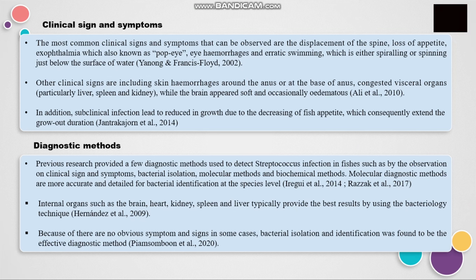For the diagnostic methods, there are several methods used to detect Streptococcus infection in fishes, such as observation of clinical signs and symptoms, bacterial isolation, molecular methods, and biochemical methods. Molecular diagnostic methods are more accurate and detailed for bacterial identification at the species level. Internal organs such as brain, heart, kidney, spleen, and liver typically provide the best results using bacteriology techniques. Because there are no obvious symptoms and signs in some cases, bacterial isolation and identification was found to be the most effective diagnostic method.